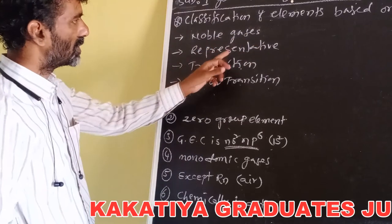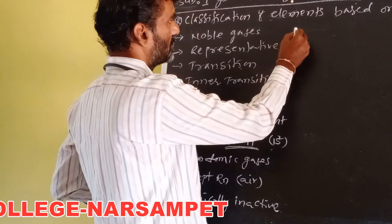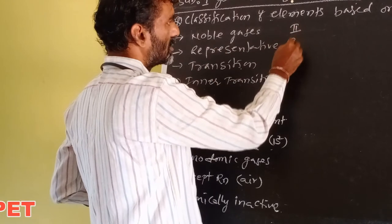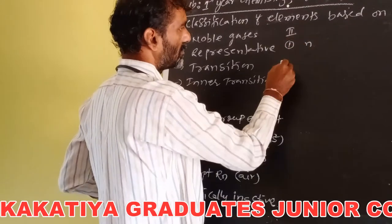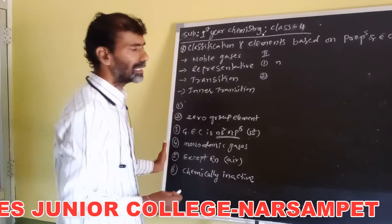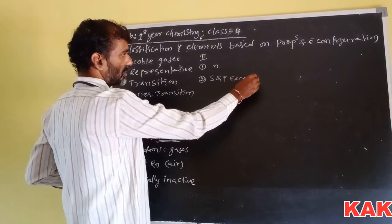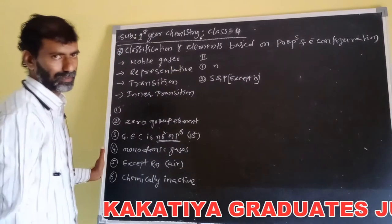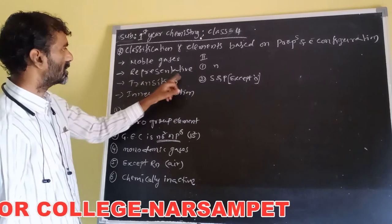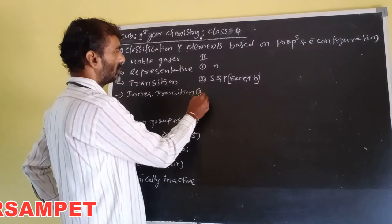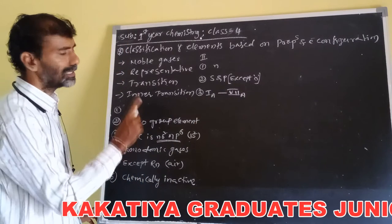The second type is representative elements. They have incompletely filled valence shells with electrons. The elements of the S and P block, except the zero group, are called representative elements. These elements range from group 1A through group 7A, excluding group 8A or zero group.